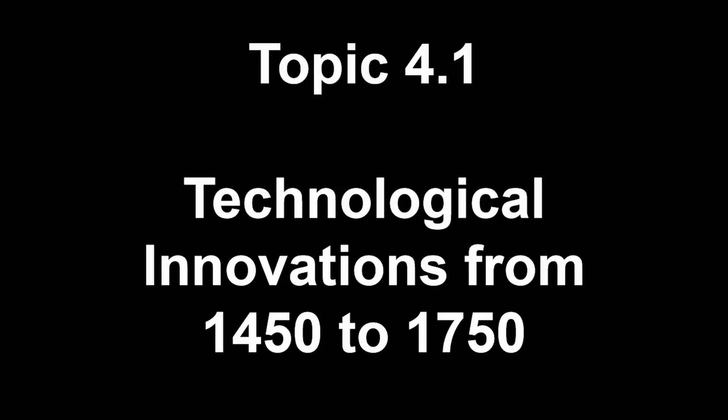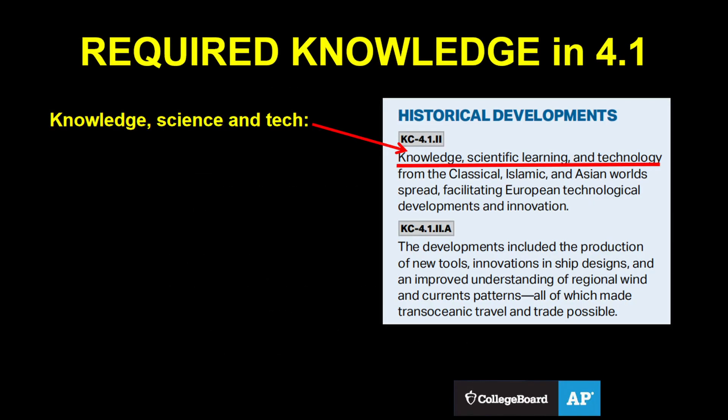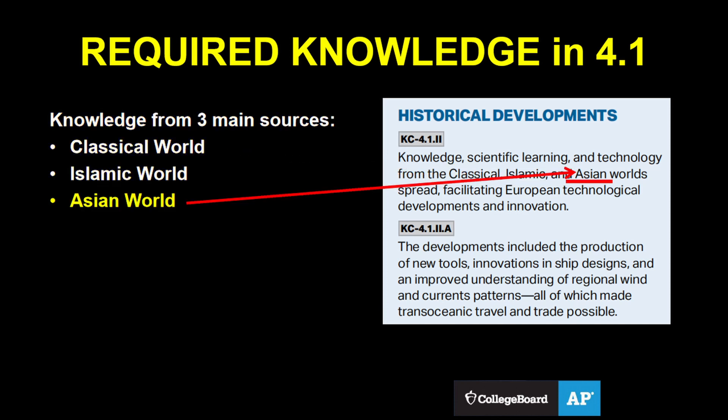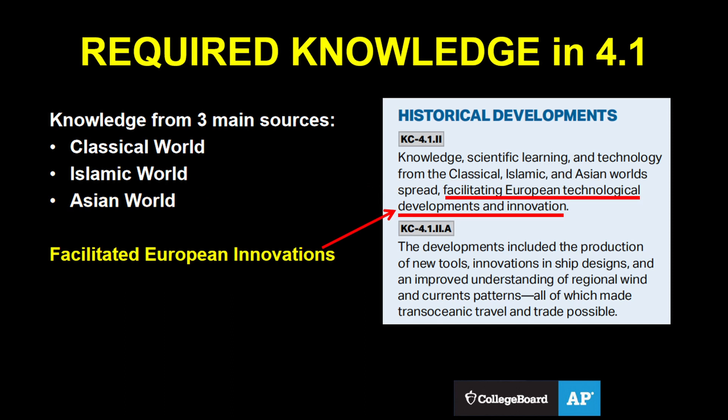Where shall we begin? Same old place we always do — the course and exam description. Here's the required content for 4.1: Technological Innovations. Knowledge, scientific learning, and technology spread from three main sources: the classical world, the Islamic world, and the Asian world. They spread in particular to Europe, which then facilitated European technological developments and innovations.